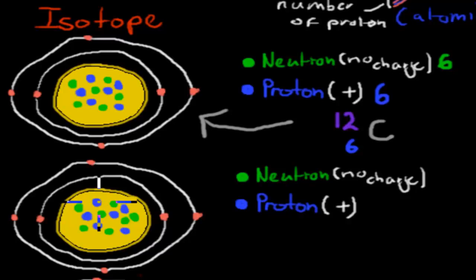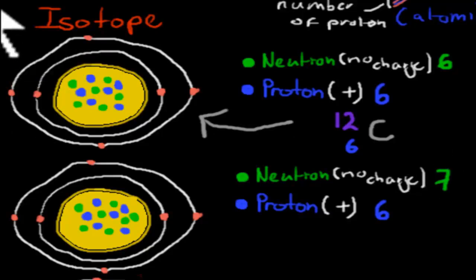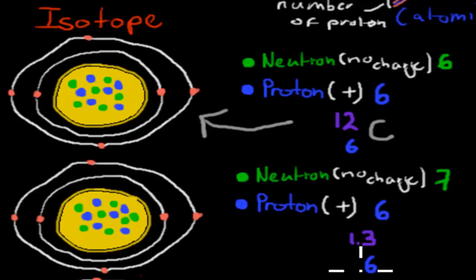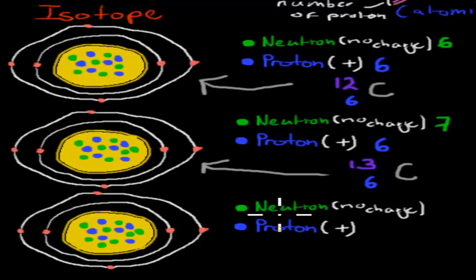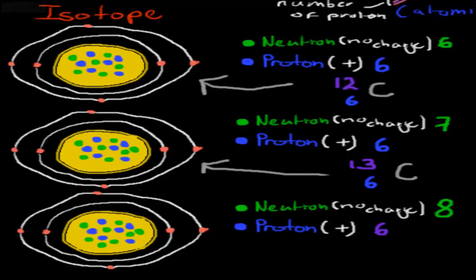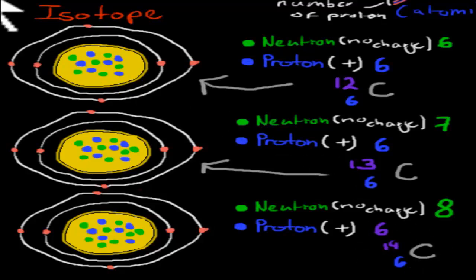This next one has 6 protons and 7 neutrons. That's 6 plus 7, so the atomic mass is 13, still with 6 protons — this is carbon-13. Then the third has 6 protons and 8 neutrons: 8 plus 6 equals 14, so it's carbon-14 with atomic number 6. Carbon-12, which is the majority of our carbon, is stable. Carbon-13 is still more or less stable — carrying a bit more, but still stable. Whereas carbon-14, with 6 protons and 8 neutrons, is unstable.